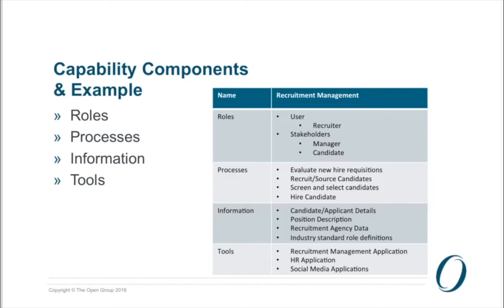We usually use this in the concept of trying to come up with the definition of a particular capability. Where people start to get into the name and description, they're putting a lot of the other aspects of it. One of the questions is — does not the process indicate the how? It indicates the how within the capability, but not how that capability is used outside of itself. There are some things within a particular business capability that are opaque to some degree outside of itself.